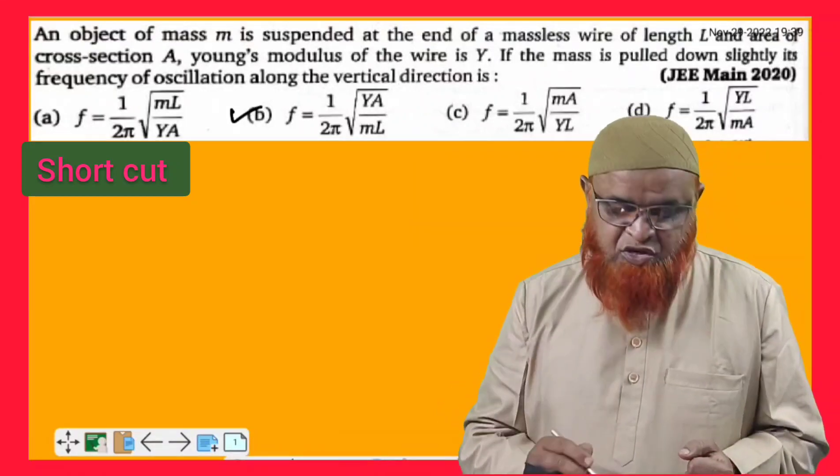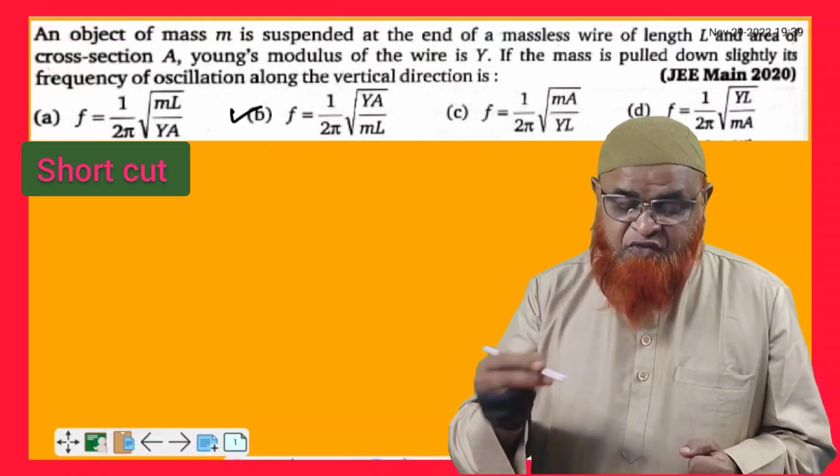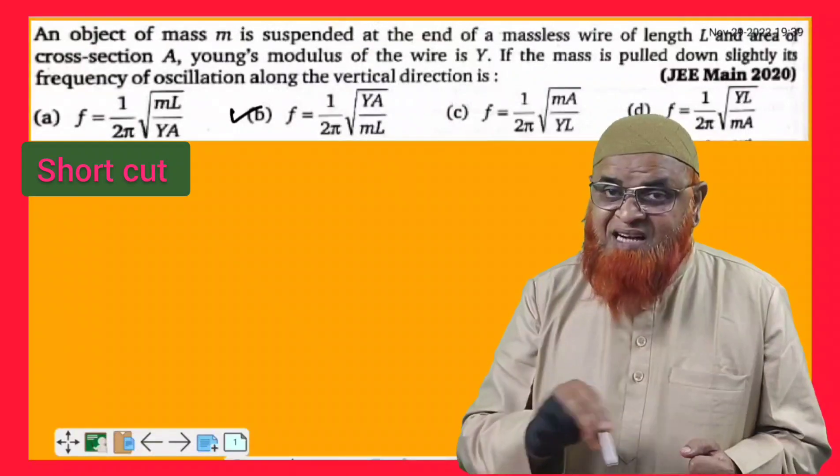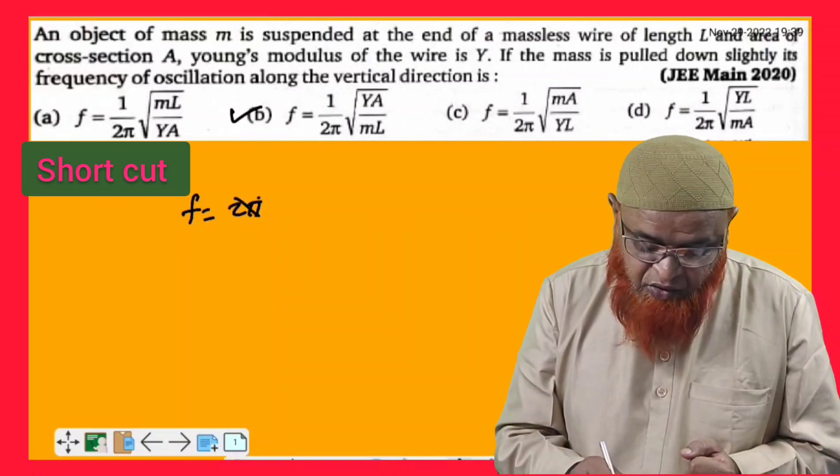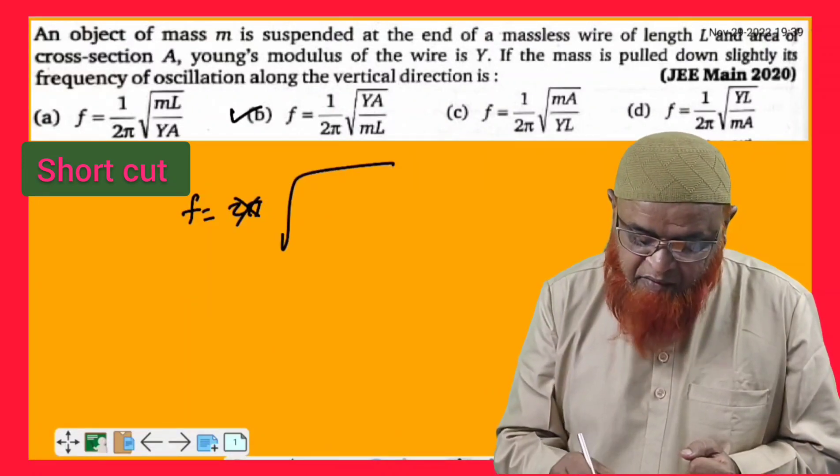That second option if you observe, that is b, you can find out frequency will be equal to right hand side whatever the value is given there. What are the physical quantities here? If you observe f is going to be 2π. 2π does not have any dimensions.